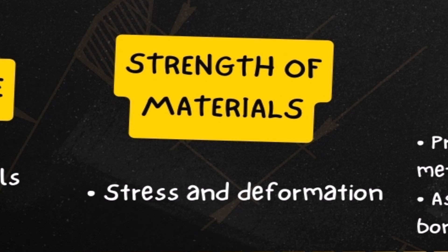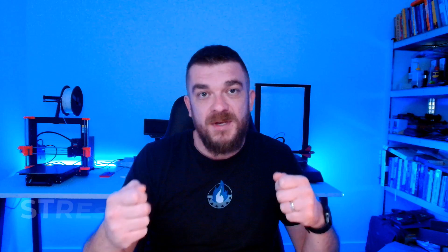Strength of materials examines how materials deform and withstand loads, which is crucial for designing structures and products that can endure operational stresses. We use knowledge from statics to define the loads acting on the shaft, knowledge of material science to define the proper material, and then strength of materials to calculate stresses and deformations — to see if the shaft will deform and fail. Based on the results, we may change the material or geometry of the shaft.